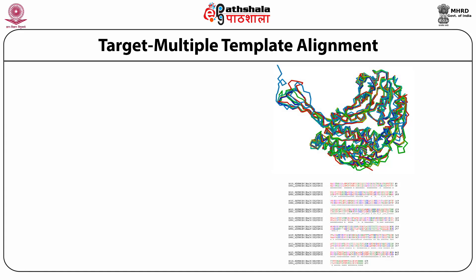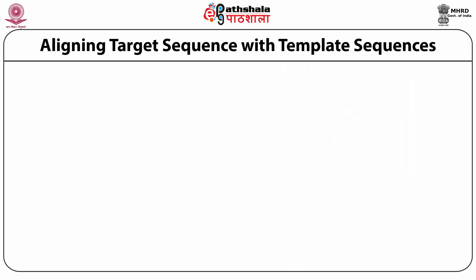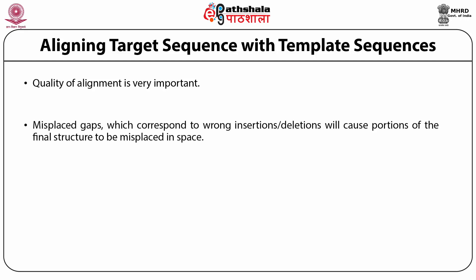Sometimes you are lucky and have more than one template — in that case, you superimpose all the template structures and prepare a structure-based sequence alignment and use that to align with your target sequence. The key thing in homology modeling is the initial sequence-based alignment between your target and template sequences. If you get it right, everything is fine; if you do not get it right, there will be problems.